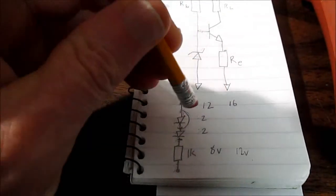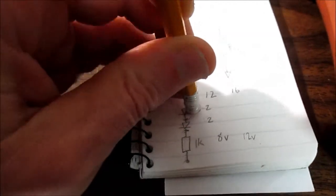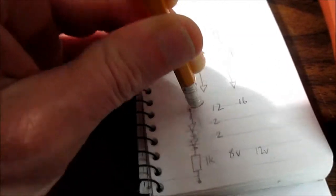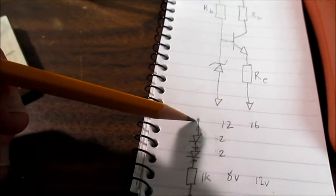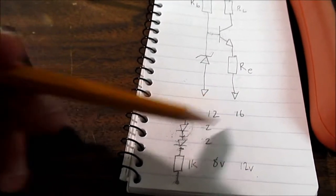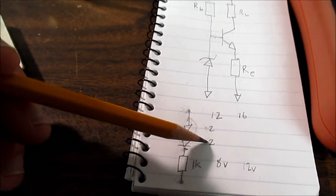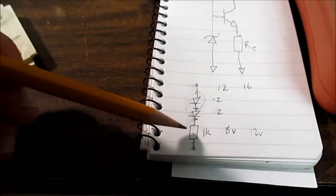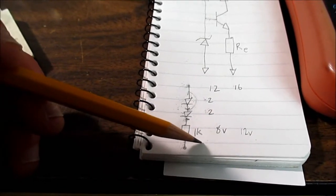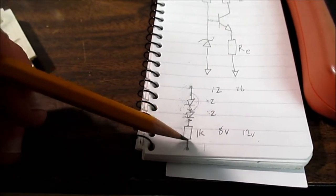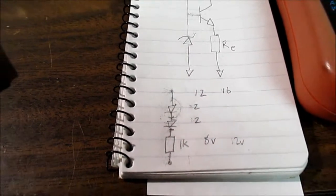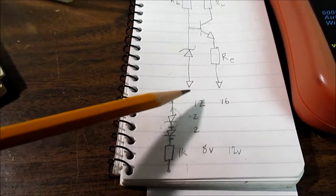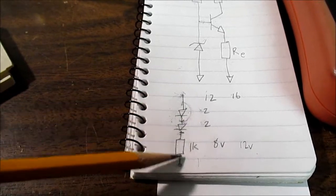So another way to think about it is if we increase the supply voltage. So I'll erase that jumper across that LED. So let's say we put 16 volts supply here. Now we take 16 minus 2 and minus 2 again. We end up with 12 volts. And we know we'll end up with 12 milliamps through the circuit.